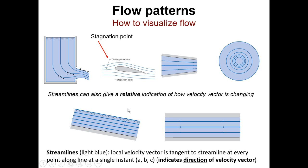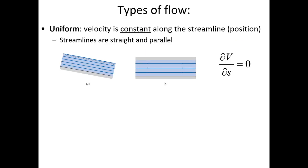Streamlines can tell us the direction of flow, changes in velocity, and where pressure might be affected by velocity changes. Uniform flow is where there's no change in the magnitude or direction of velocity with respect to position — velocity is constant along the streamline. You can see uniform flow where streamlines are parallel and the depth of flow is constant, so the change in velocity with respect to position is zero.